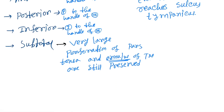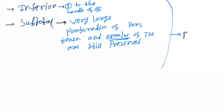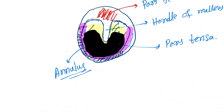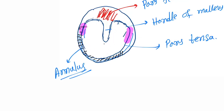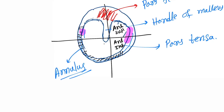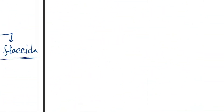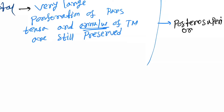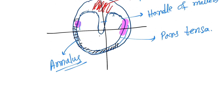Marginal perforation also has four types. The quadrants are: antero-superior, antero-inferior, postero-superior, and postero-inferior. Marginal perforation is commonly postero-superior, and so the perforation will be located in the postero-superior quadrant.